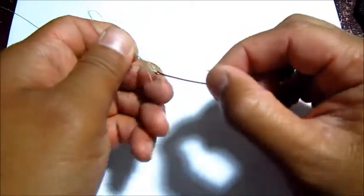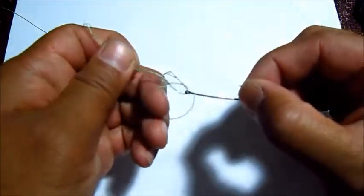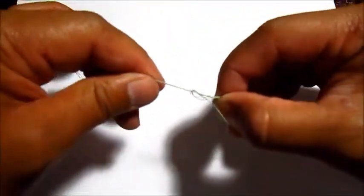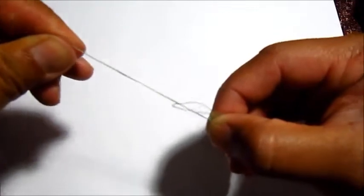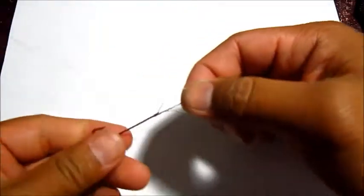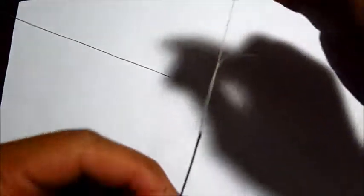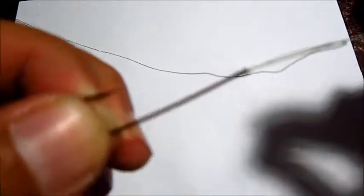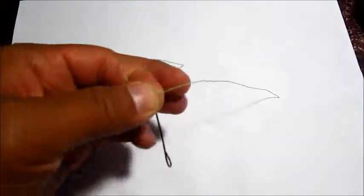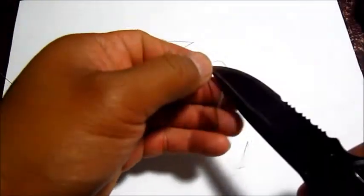Come down, wrap it around the hook, and then just cinch down like so. You're going to end up with the long tag end. Just cut that off.